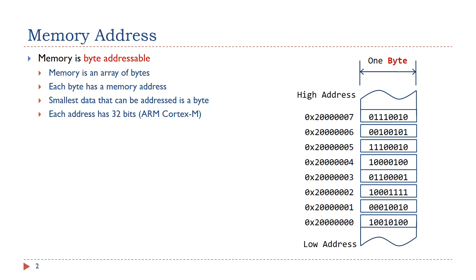First, let's review what is a memory address. We can view computer memory as an array of bytes, and each byte has a unique address. That is why we call computer memory byte addressable — the smallest data object that can be addressed is a byte. For ARM Cortex-M microprocessors, each memory address has 32 bits, which can address a total of 4 gigabytes.